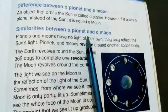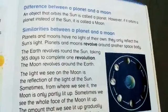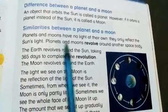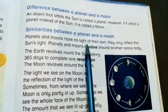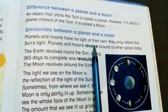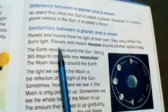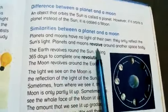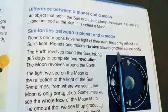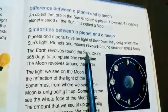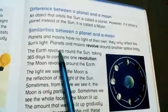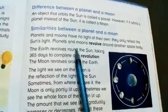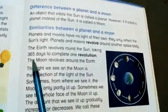Now let's check the similarities between planets and the moon. As we see, there are no lights on our planet, so how do we see them? Because of the light of the sun — they reflect sunlight, so we can see them. Planets and the moon revolve around another space body. The planets orbit the sun, and the moon orbits the planets.